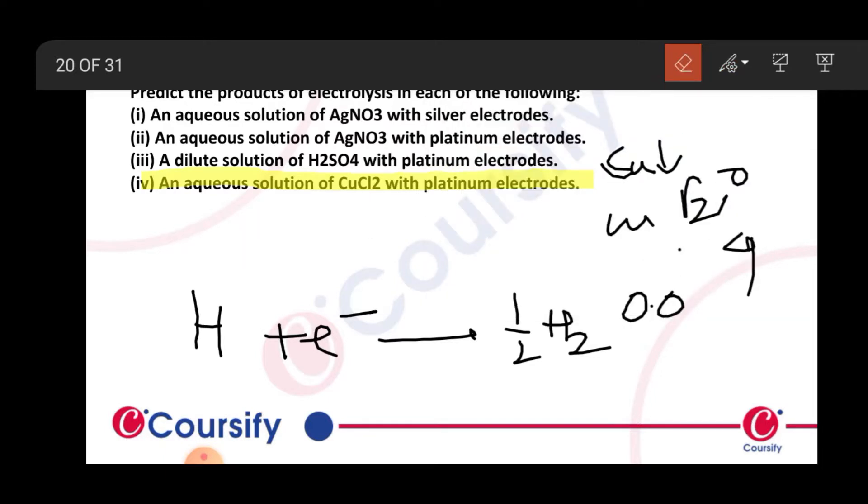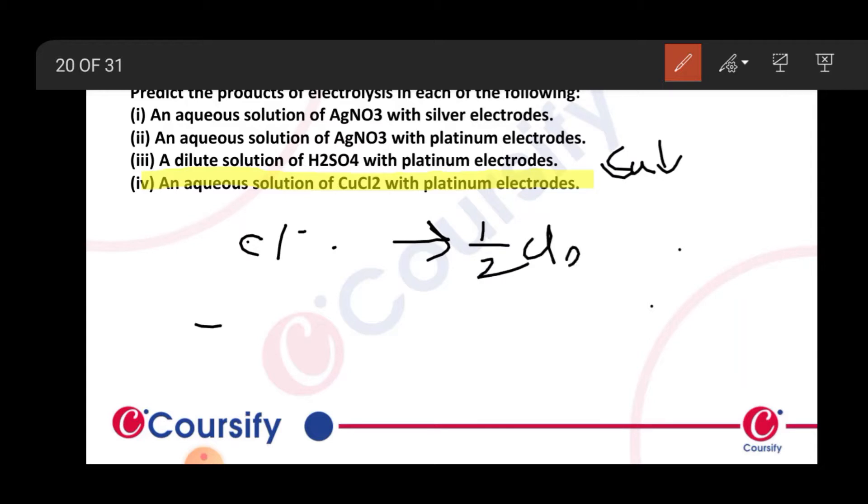At the anode with chlorine present: 2Cl- → Cl2 + 2e-. Chlorine gas will be produced at the anode.